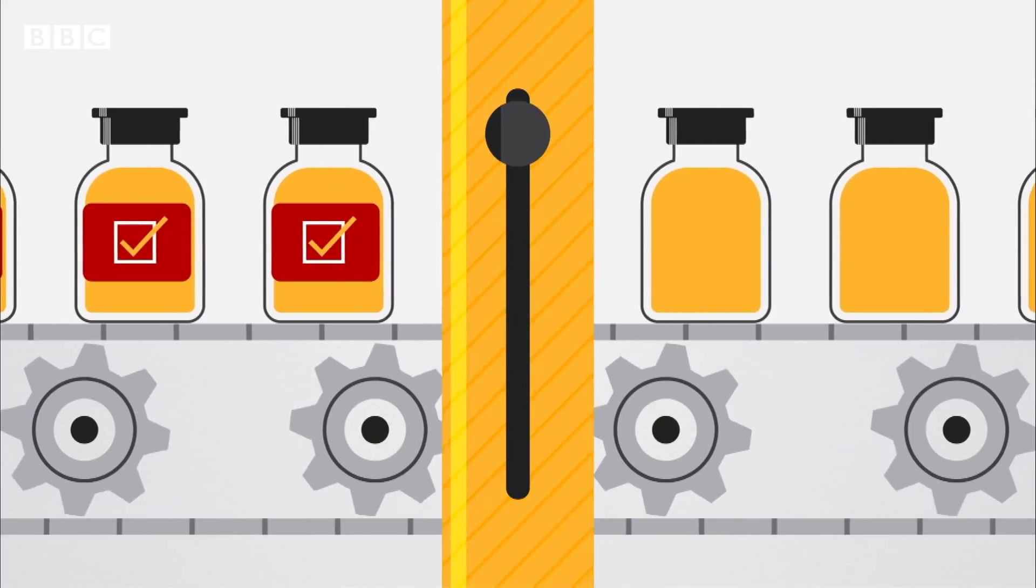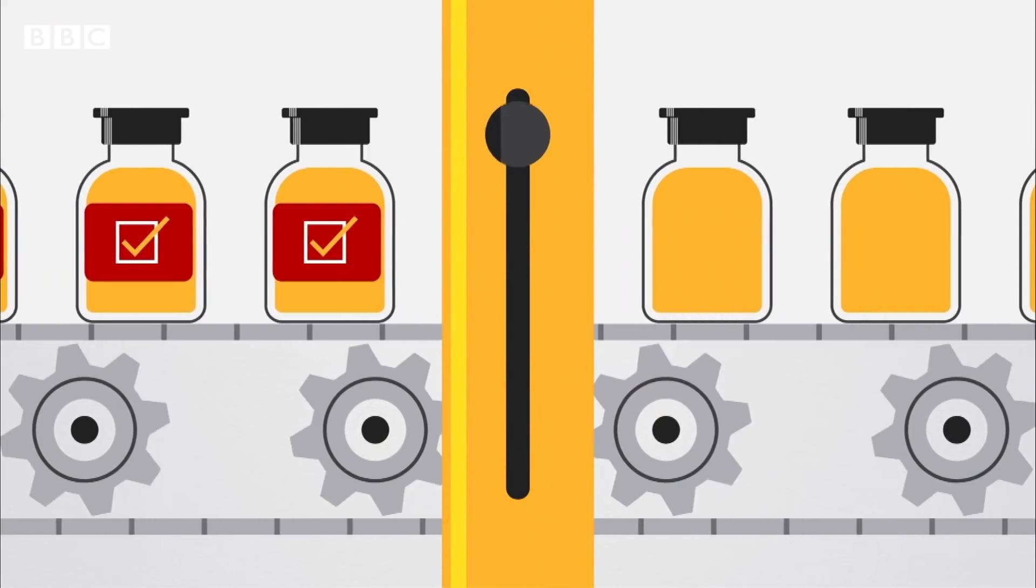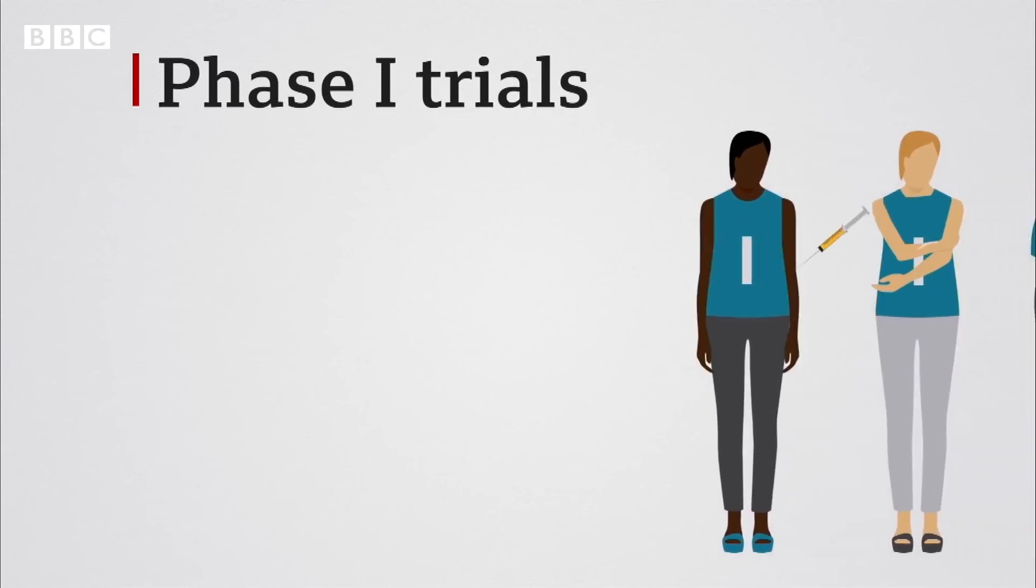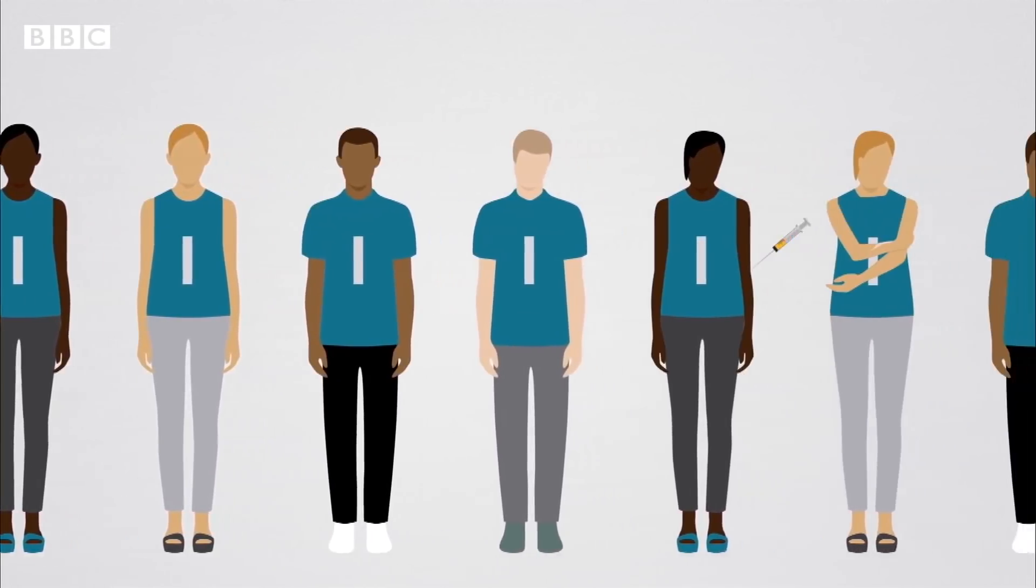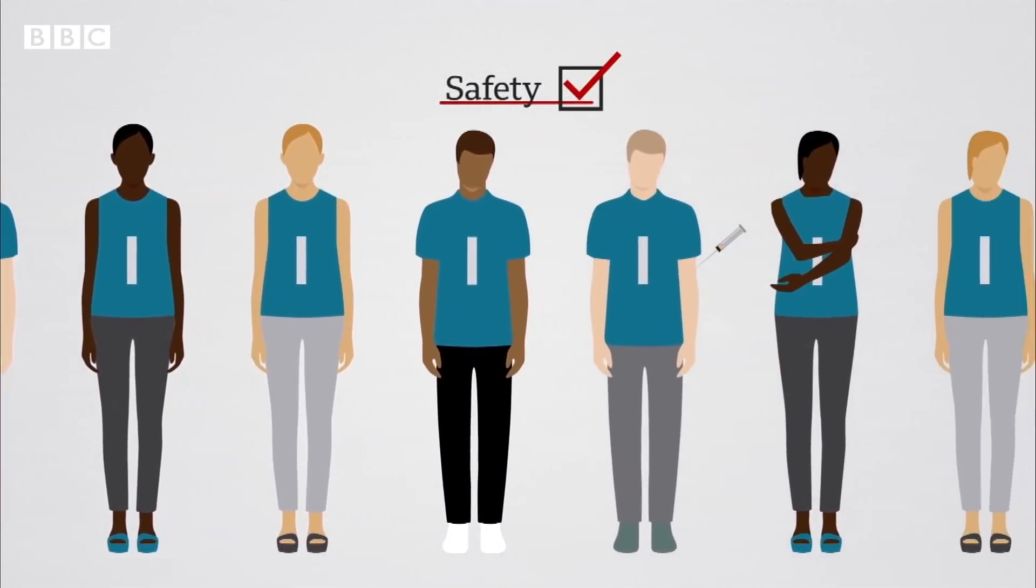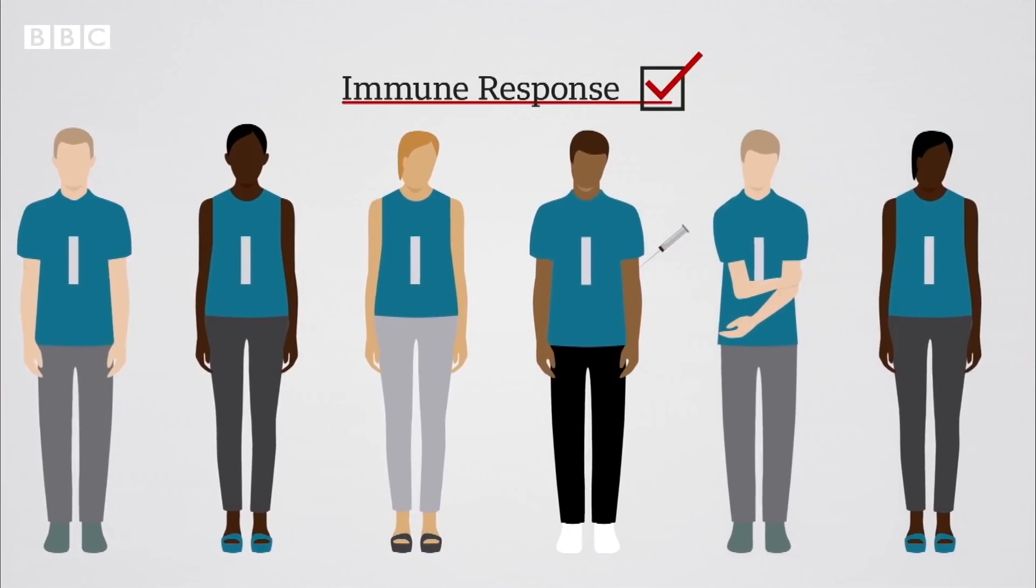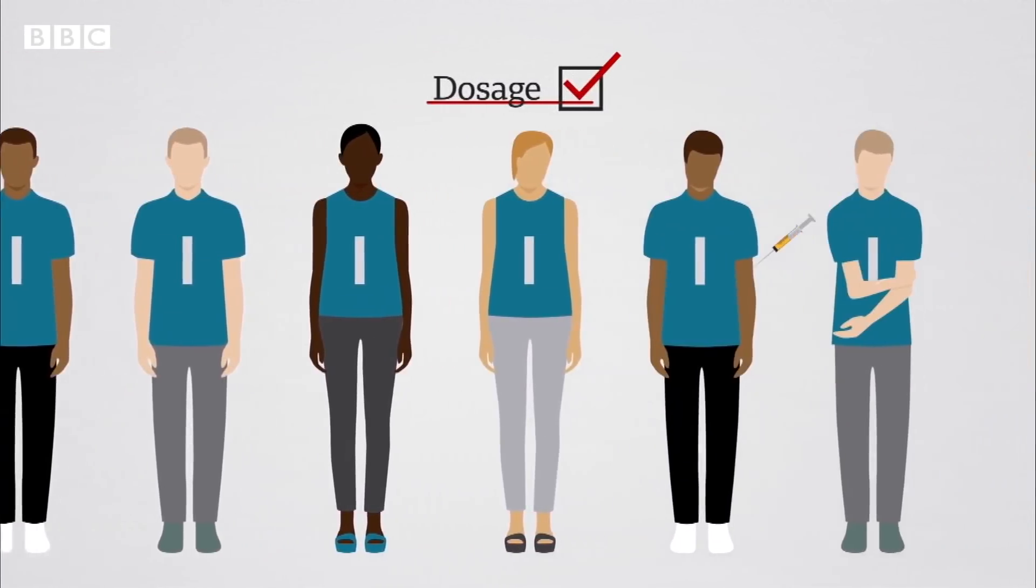If the vaccine works and is safe for animals, clinical trials begin. Phase one trials involve giving the vaccine to a small number of healthy volunteers, between 20 and 50 people. Here they're looking at safety, to check it generates an immune response and to determine the correct dosage.